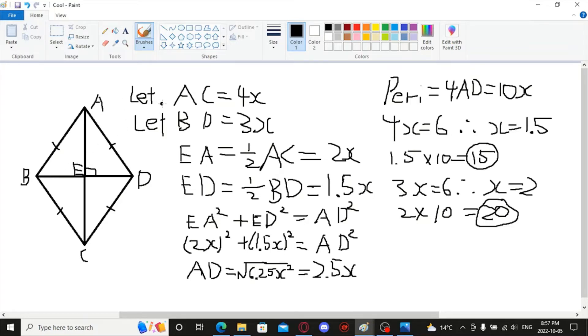From here, we have AC, which is the first diagonal. Let it be equal to 4x. And BD is equal to 3x. So, now we want to figure out what is the length of one of the vertices to the middle point, E. That would be equal to half of the entire diagonal. So, this would be 2x and 1.5x respectively, for EA and ED.